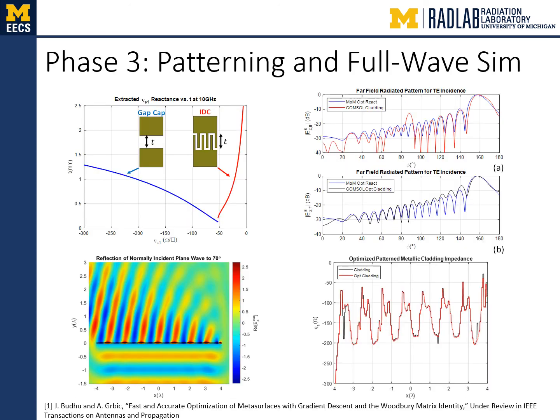In phase 3, the optimized purely reactive metasurface is realized through patterning of the metallic cladding. The sheet impedance associated with patterned parts is obtained from waveguide simulations, and these parts are used to obtain the initial metallic cladding. COMSOL Multiphysics is then used to find the scattered far field through full-wave simulation of the patterned metallic cladding over the grounded dielectric. The result shows some disagreement since the correlation between the patterned parts and their extracted sheet impedance was obtained assuming locally periodic environments; however, the optimized impedances do not vary adiabatically, leading to a small error in the extracted impedances. The full patterned metallic cladding was then finely tuned through optimization to obtain better results, and the agreement in the blue curve is much better.